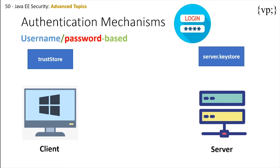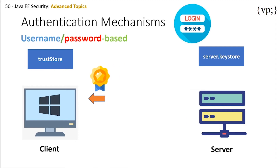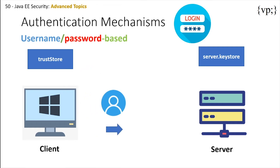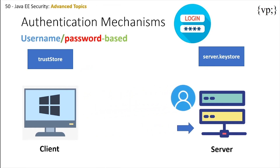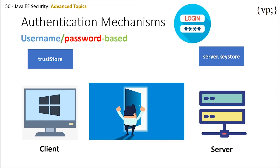Username and password-based authentication is a little bit different. Here, the client still requests access to a protected resource, and the server then sends its certificate. But in this case, the client's own trust store will verify the server's certificate. Only after that does the client send the username and password to the server. The server then verifies the client's credentials using its own server key store. If the verification is successful, the server grants access to the protected resource requested by the client.